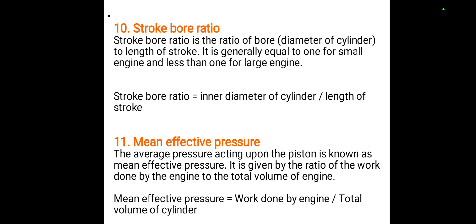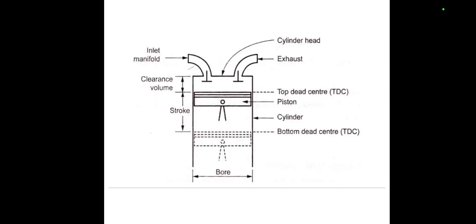Mean Effective Pressure is the ratio of the total volume of the cylinder to the length of the stroke. The figure shows all the important terms: stroke, clearance volume, BDC, TDC, piston, cylinder, exhaust valve, inlet valve, and cylinder head.